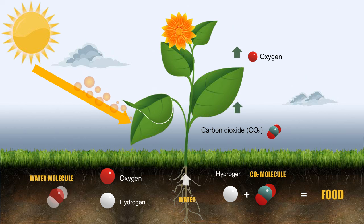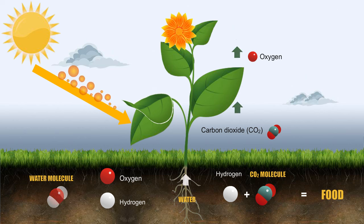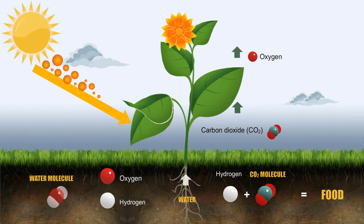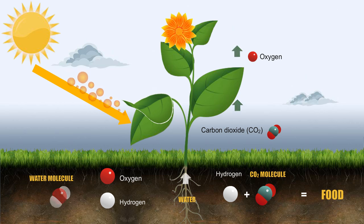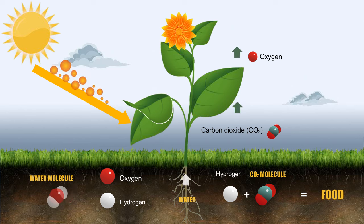Some of the glucose is used to provide energy for the growth and development of plants, while the rest is stored in leaves, roots, or fruits for later use by plants.